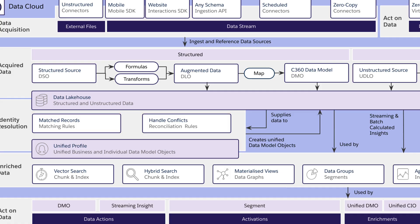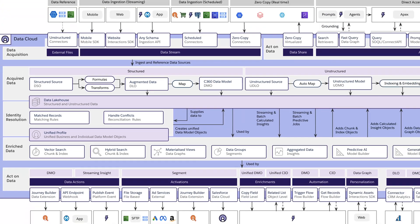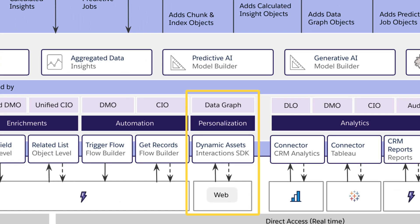Once we have that data we can enrich it, and in this use case we're going to use data graphs. Then finally we're going to act on the data — in this case we're going to use Personalization, and again we'll use the Web Interactions SDK in order to fetch those dynamic digital assets from Personalization to display in our website.